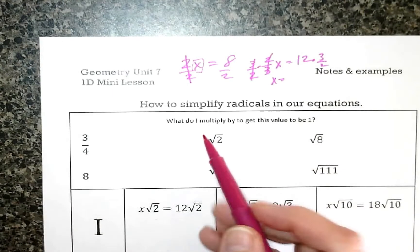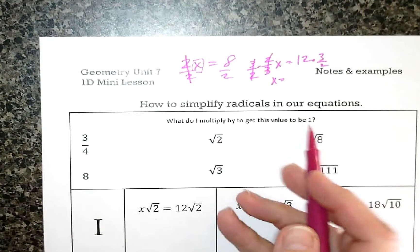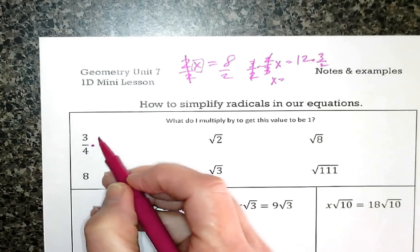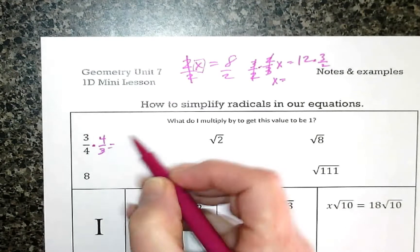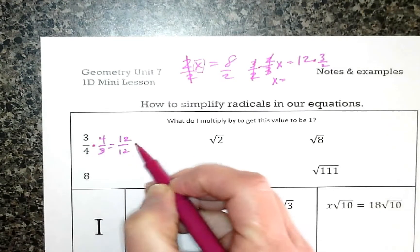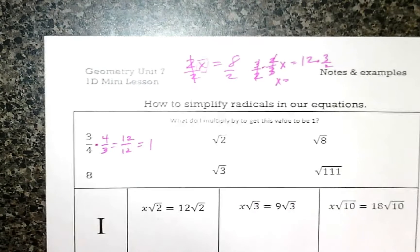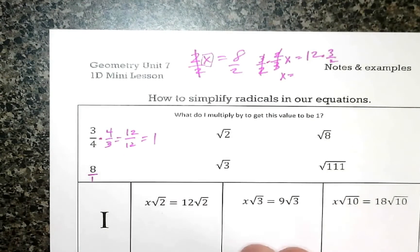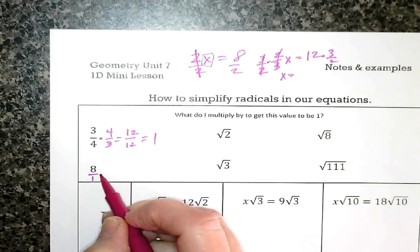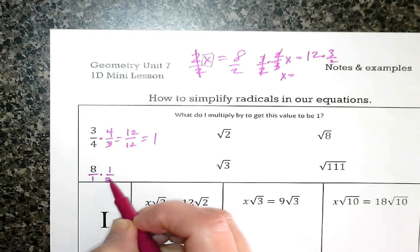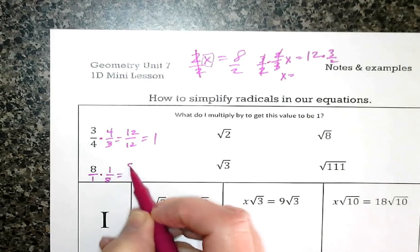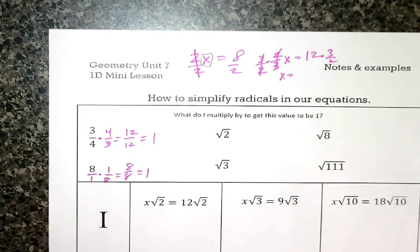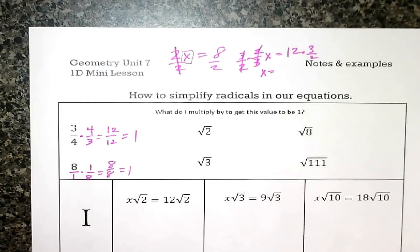To simplify, we multiply to get a value of 1. For three-fourths, I multiply by the reciprocal four-thirds, giving me 12 over 12, which is 1. For the number 8, written as 8 over 1, the reciprocal is 1 over 8, giving me 8 over 8, which is 1. Now, with square roots there are lots of different ways we could teach this.